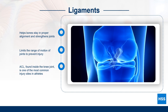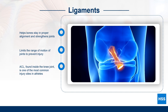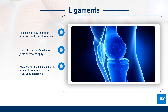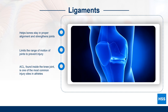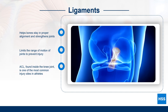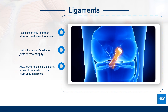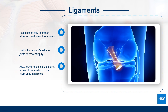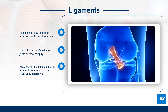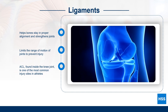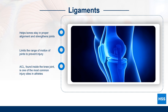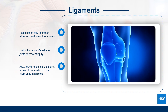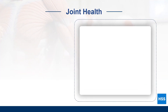One of the most commonly injured ligaments is the anterior cruciate ligament, or ACL. The ACL is found behind the patella, or kneecap, and prevents leg bones from moving into an unsafe position.